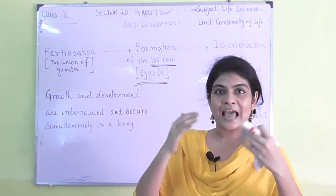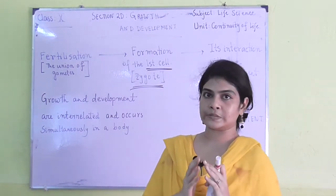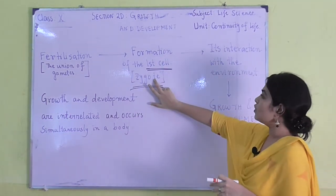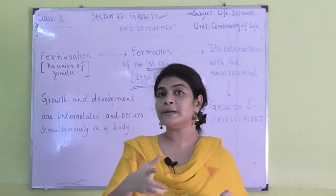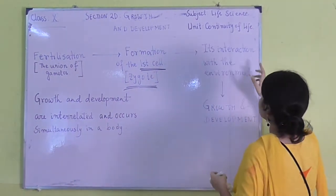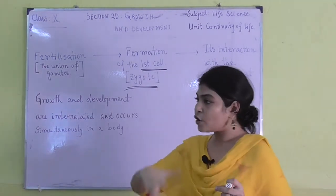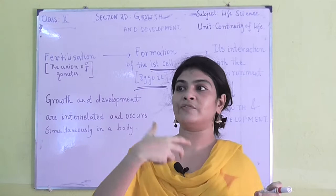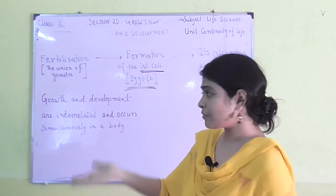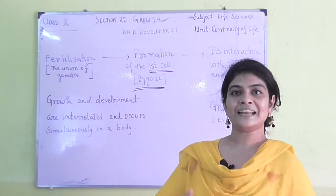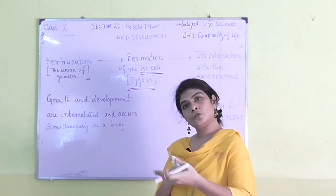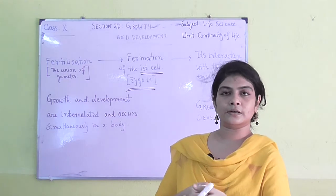As a result, the cell divides and continues its process towards a multicellular organism. When the zygote is formed, it starts interacting with the environment — first with the internal environment within the mother's womb as it forms into an embryo. Once it comes out of the womb, it interacts with the external environment, and throughout this entire process the growth and development will continue simultaneously.